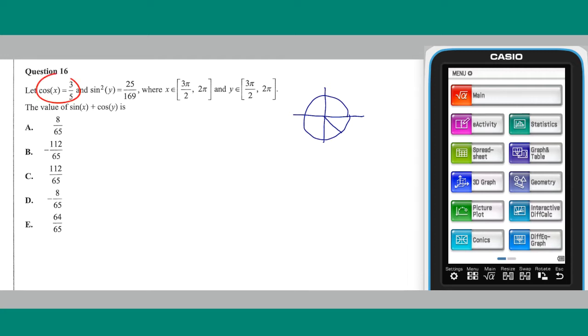Cosine x equals 3 over 5 usually implies that sine x equals 4 over 5, based on this Pythagorean triple. In the fourth quadrant, this becomes sine x equals minus 4 over 5.